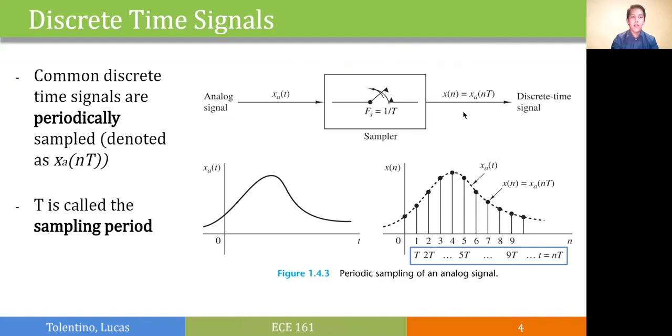In the figure below, we can see that xa of t, the analog signal, becomes a sampled signal x of n, wherein the samples of the sequence are evenly spaced by integer multiples of T.